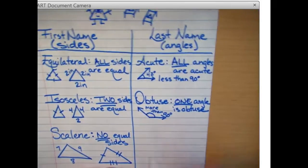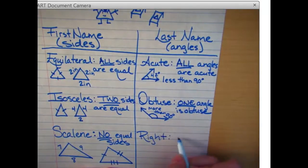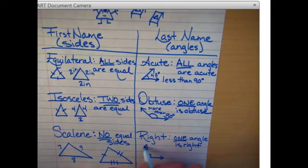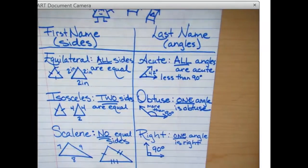And the last one, super easy to remember, is right. It is named a right triangle when one, only one, angle is a right angle. Right angles are signified by these little boxes in the corner. These are 90 degrees. If it's 91, it's obtuse. If it's 89, it's acute. Only 90 degree angles are right angles.